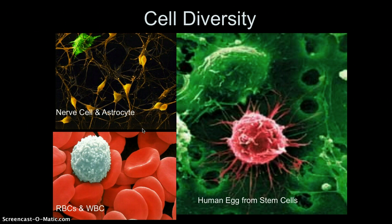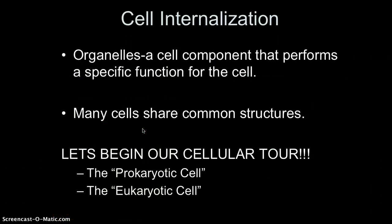Cell diversity is remarkable. In humans, we start with a human egg and a stem cell, which can differentiate into the many trillions of cells in the human body — whether an astrocyte, nerve cell, red blood cell, white blood cell, epithelial cell, and so on. When we talk about cell structures, we often refer to them as organelles — little compartments that each perform a specific function. A helpful analogy is to think of the cell as a factory, where each organelle has its specific job, just as each part of a factory has a role in the manufacturing process.